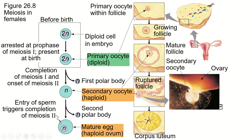The follicle — all of these cells from the follicle that didn't get released with the oocyte — they stick around in the follicle and they change shape and take on this structure. They become something we call a corpus luteum. They produce the hormones that will support the development of the pregnancy for about three months until the placenta and the fetus start to produce their own hormones.